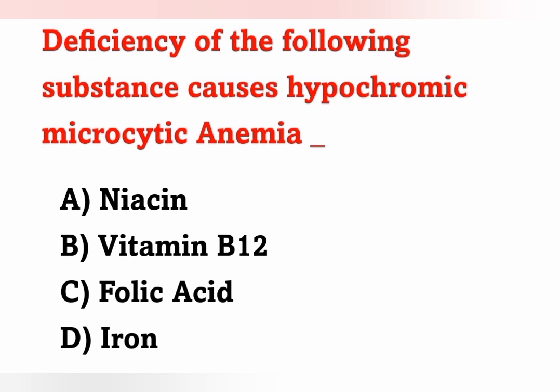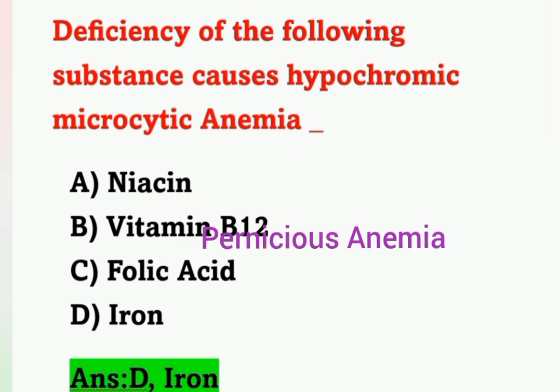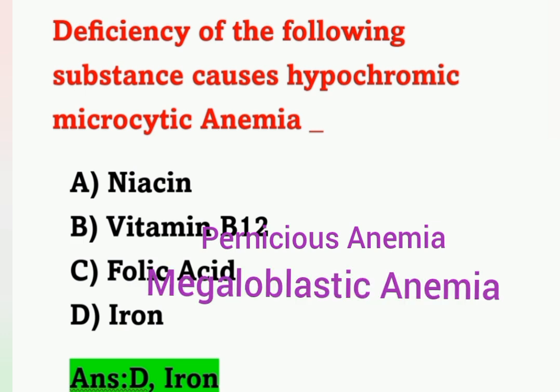Next question: Deficiency of which substance causes hypochromic microcytic anemia? Options: A) Niacin, B) Vitamin B12, C) Folic acid, D) Iron. Hypochromic microcytic anemia occurs due to deficiency of iron, option D. Niacin is vitamin B3 — its deficiency causes pellagra, characterized by the 3D syndrome: dermatitis, dementia, and diarrhea. Vitamin B12 deficiency causes pernicious anemia, and folic acid deficiency causes megaloblastic anemia.